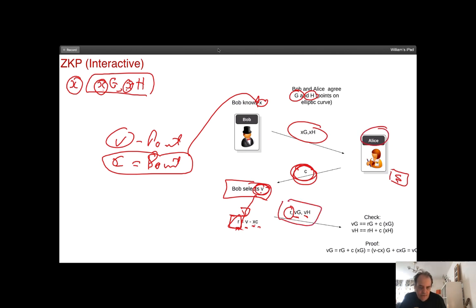Then Bob sends back r, sends back v times g and h times v, so it's not possible for Alice to know the value of v because it's hidden in these values here. Once she returns, she checks to see that these values are equal to r times g plus c times xg which she has. If we do this we can show the proof of it and end up with the correct value. This is defined as interactive because Alice needs to send a challenge to Bob.